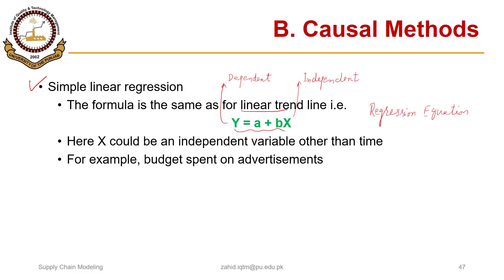In linear trend line that we discussed, the x was time. Here x is something other than time. So x could be an independent variable other than time.